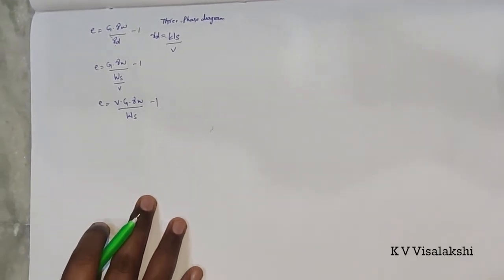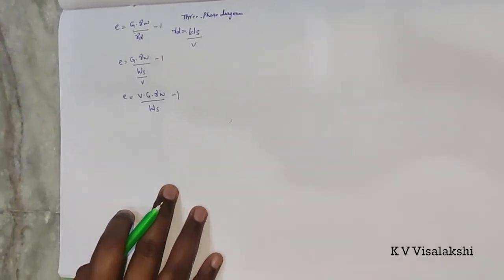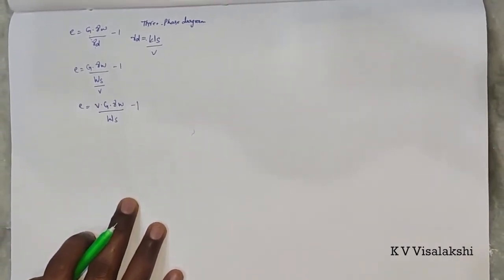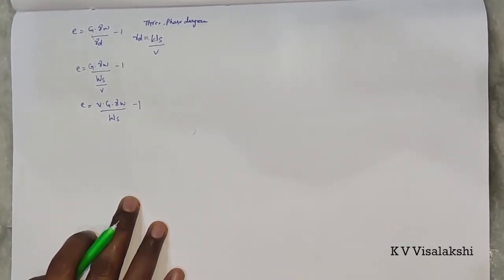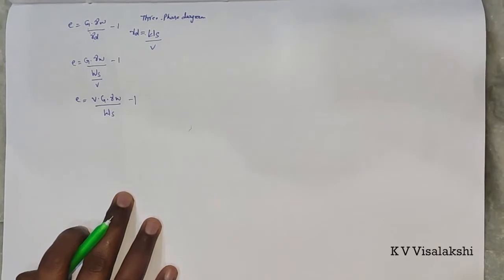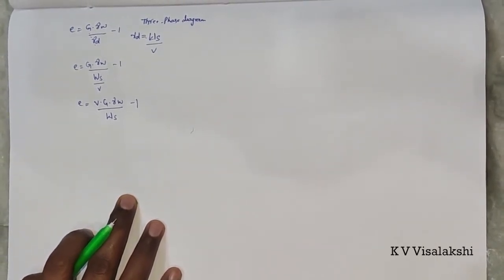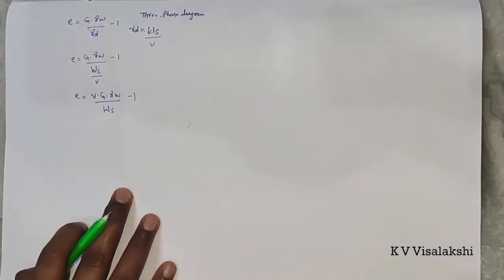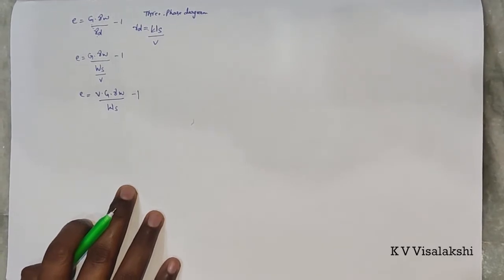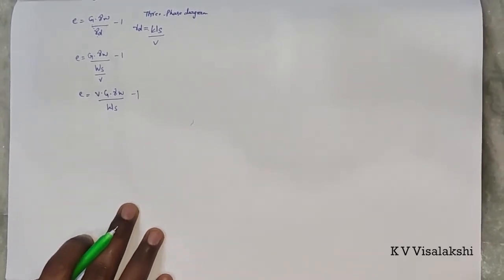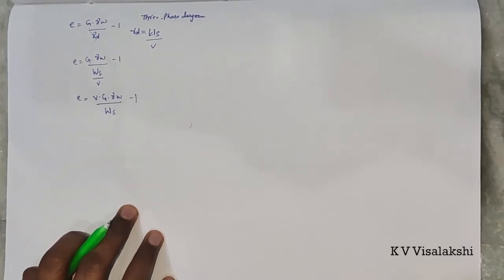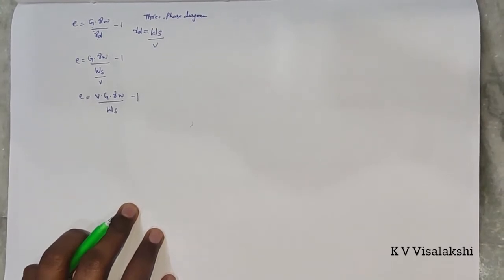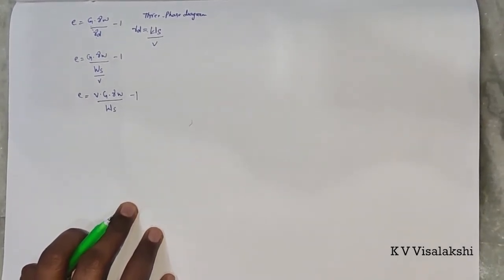The void ratio E equals G·gamma_W divided by gamma_D minus 1. Substituting gamma_D gives E equal to V·G·gamma_W divided by WS minus 1. While finding this void ratio we should have knowledge on specific gravity of soil. For determination of volume of soil sample, there may be a source of error in case of clay soils, so this concept of density index is applicable only in granular soils such as sands.